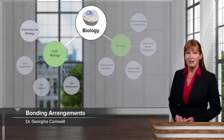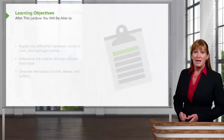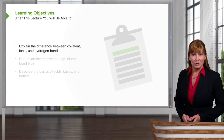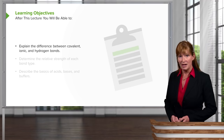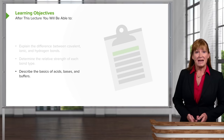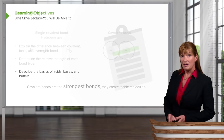In the last lecture, you learned about atomic structure of the biological elements in the first three periods of the periodic table. In this lecture, we're going to move forward and look at how the electrons in the outermost valence shell result in bonding arrangements. By the end of this lecture, you should be able to explain the difference between covalent, ionic, and hydrogen bonds, as well as determine the relative strength of each bond type. Towards the end of the lecture, we'll take an exploration of the pH scale and learn a little bit about acids, bases, and buffers.